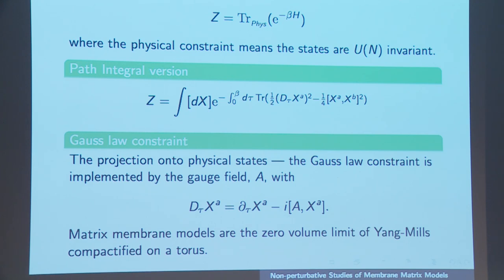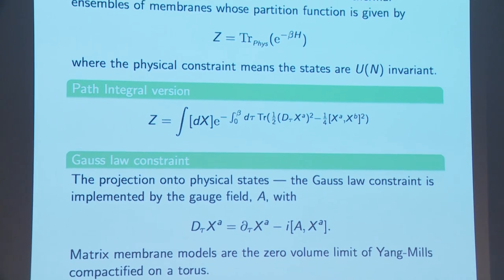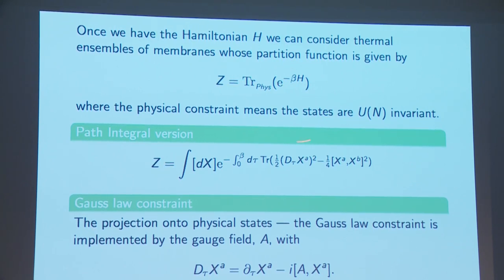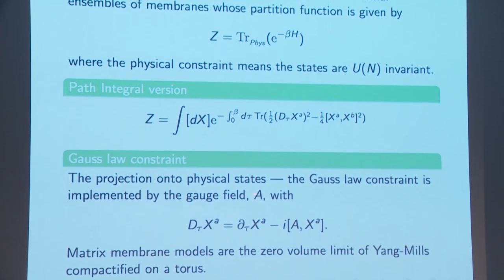An interesting quantity from the physics point of view is to study the partition function of such an object: Z = Tr over physical states of e^{-βH}, where physical states means we're focusing on U(N) singlets. The path integral version is to integrate over the action associated with the Hamiltonian H, which is periodic in imaginary time, then do a path integral over the matrix versions of the embedding coordinates. The Gauss law constraint is implemented by a Lagrange multiplier field which is this gauge field.